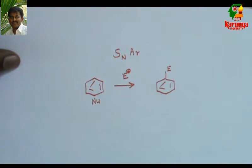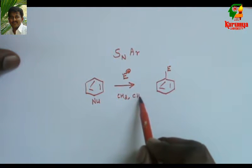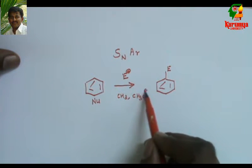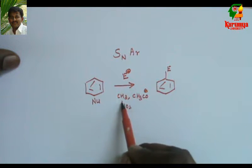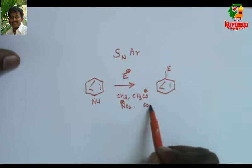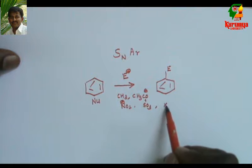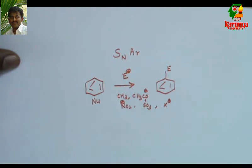The electrophile may be alkyl or acyl, nitro, SO3+, or halogen. Generally, the aromatic ring undergoes aromatic electrophilic substitution. Because it is nucleophile, it attacks electrophile.